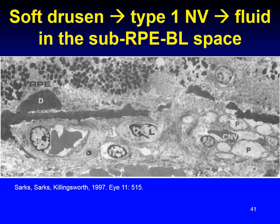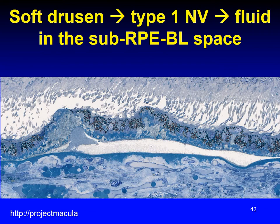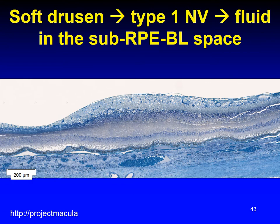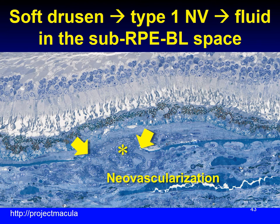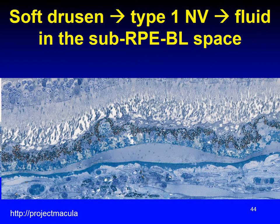In the next sequence, I will show the physical continuity between soft drusen and type 1 neovascularization. We begin with the Sarks' ultrastructural demonstrations of a breach in Bruch's membrane through which neovascular tissue travels. We can see in one continuous long histology section a soft drusen with an artifactual cleavage plane. A few hundred microns away is a breach in Bruch's membrane through which neovascular tissue, complete with activated pericytes, passes. Between these two locations, there is sub-RPE basal laminar fluid continuous with the drusen and the exudate fluid from the neovascular membrane.